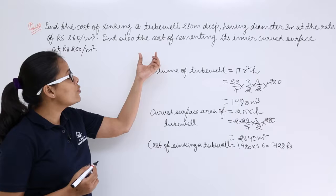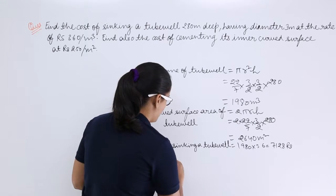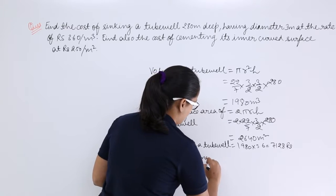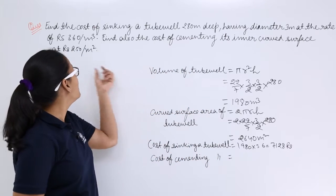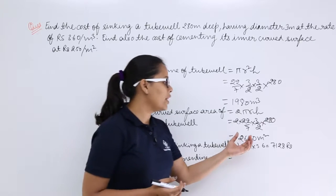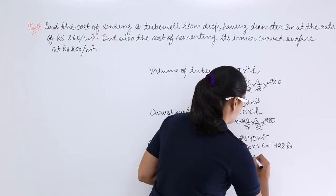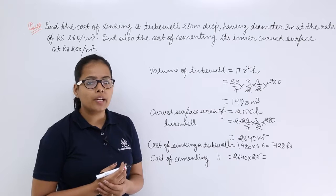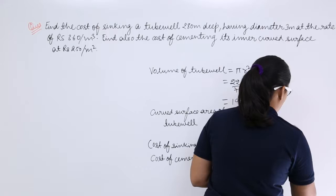Now, after this you need to find out the cost of cementing this tube well. Cost of cementing tube well will be the rate, of course that rate given to you is rupees 2.5 per meter square. You have the area of this tube well. So what you'll do? Let's multiply the area with the rate. After multiplying what you'll get? You'll get 6600 rupees.